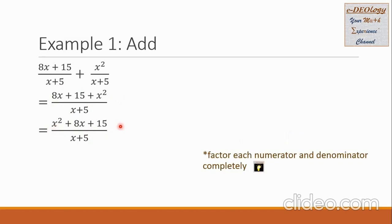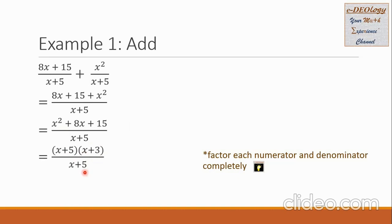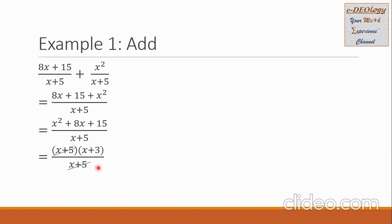Let us factor the numerator and denominator completely. The numerator can be factored into x plus 5 times x plus 3. The denominator is already simplified, so we just copy it down. We can see that x plus 5 is common to numerator and denominator, so we can cancel it out. Only x plus 3 remains. So this is our final answer.